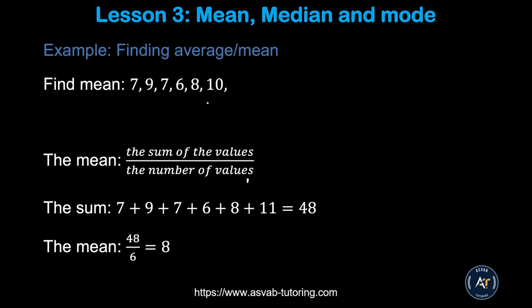The first thing we learn here is how to find average or mean. Average and mean are the same thing. If you want to find the mean or average, you have to add the numbers. You could see there are a few random numbers: 7, 9, 7, 6, 8, and 10. You have to add the numbers and then divide by the count. When you add them up, that gives you 48. If you divide that by 6, that gives you 8. So the correct answer is 8.